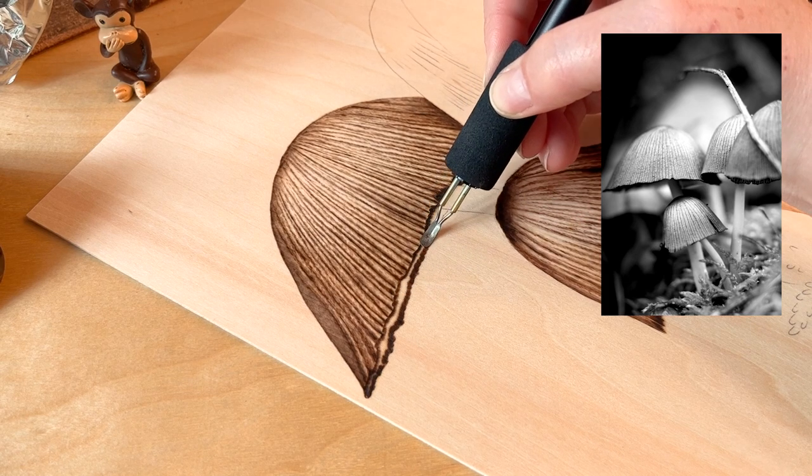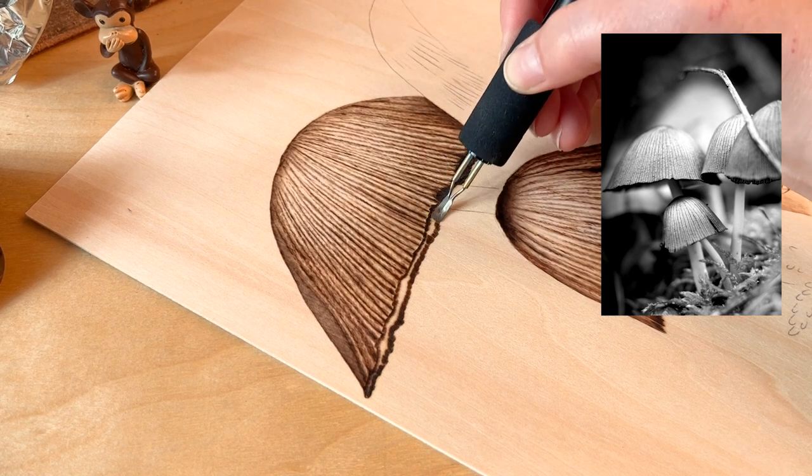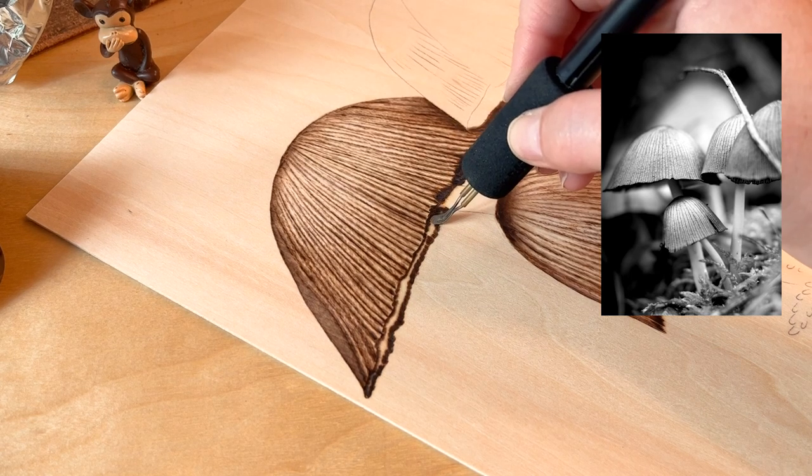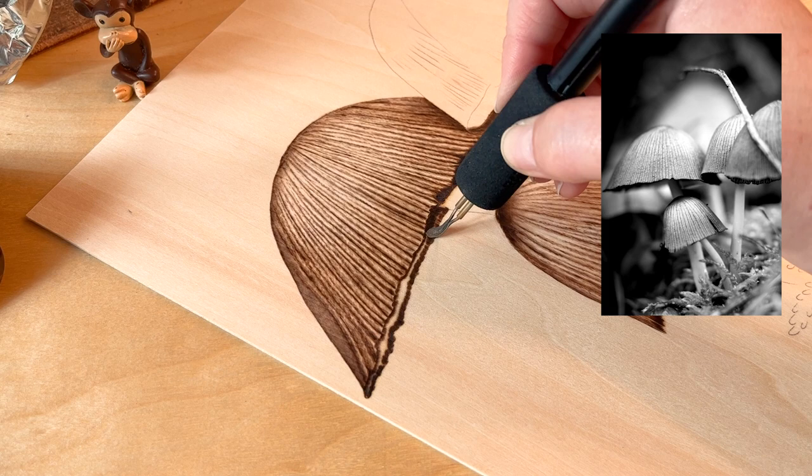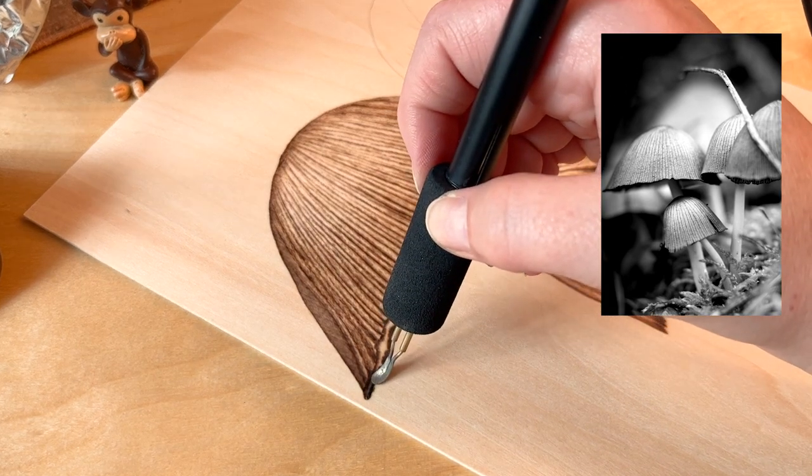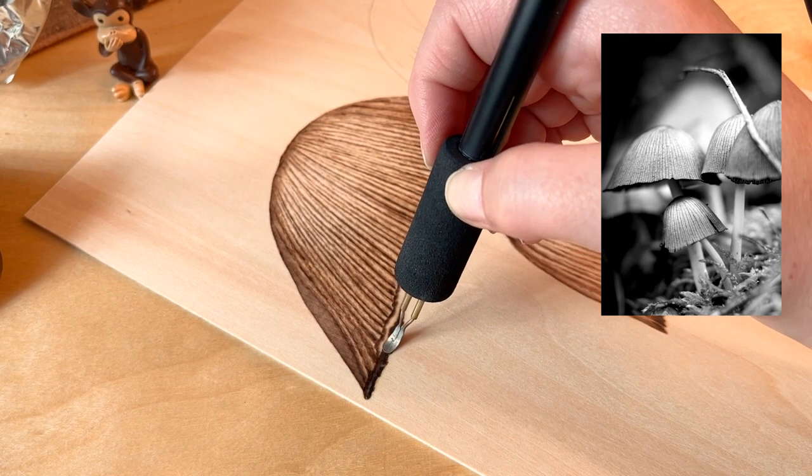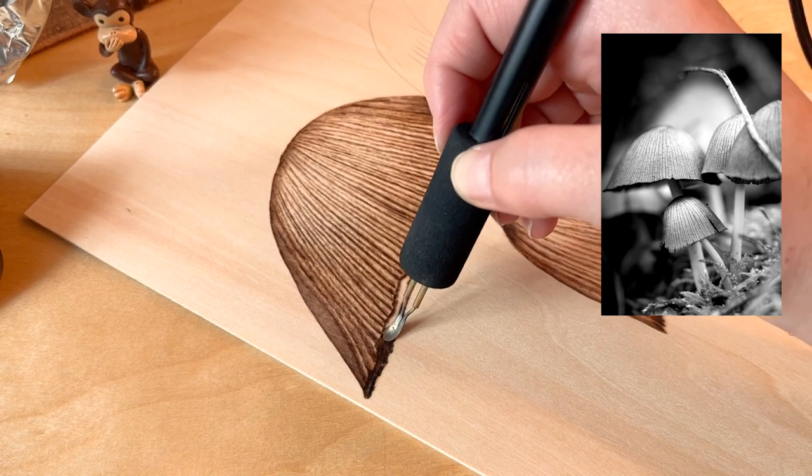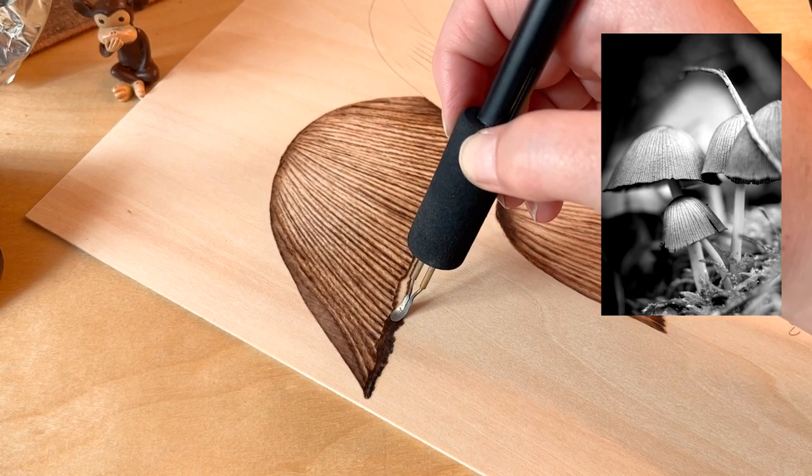I'm going up on my heat to about 650 because I want to be able to burn darker quicker. You can leave it on a lower heat; it's just going to take you longer. You don't want it to go too high on your heat or it'll just melt the wood and you won't be able to achieve that darker color.